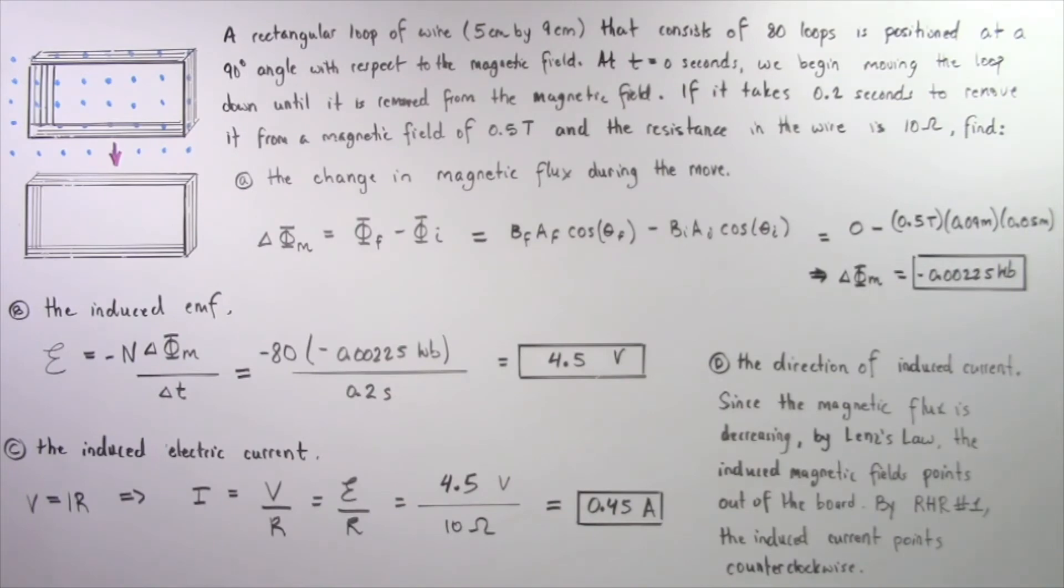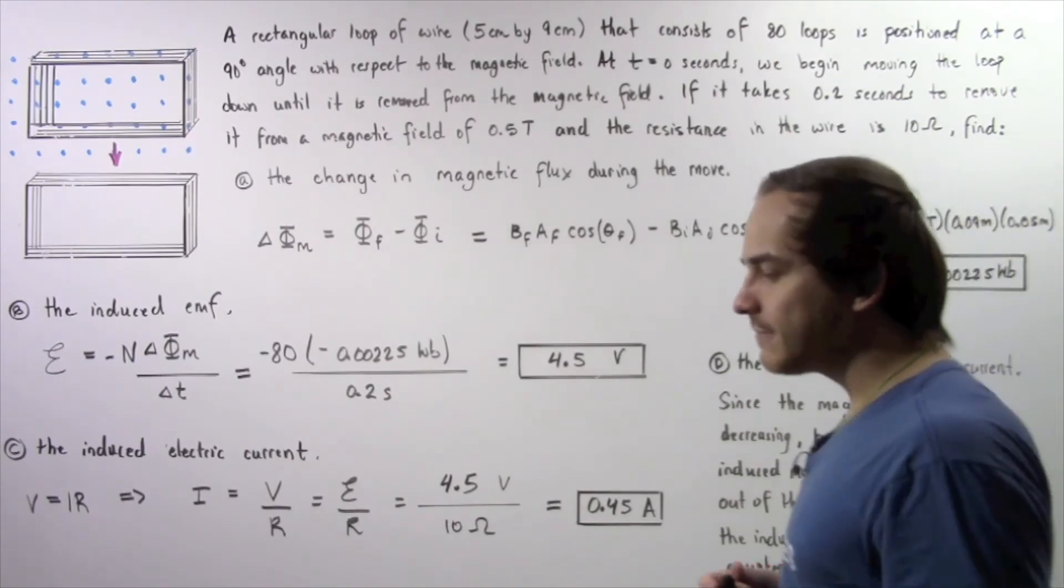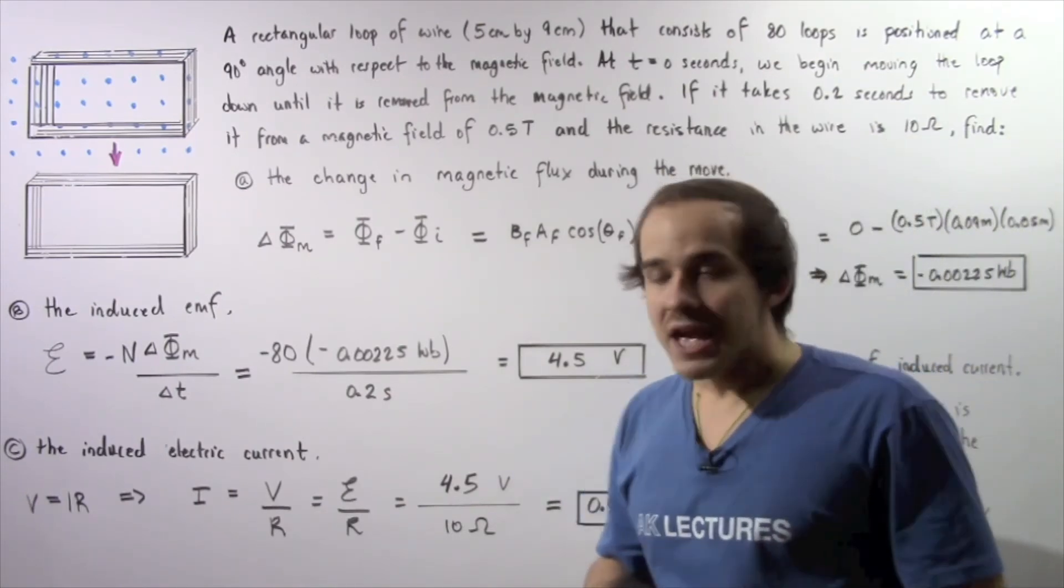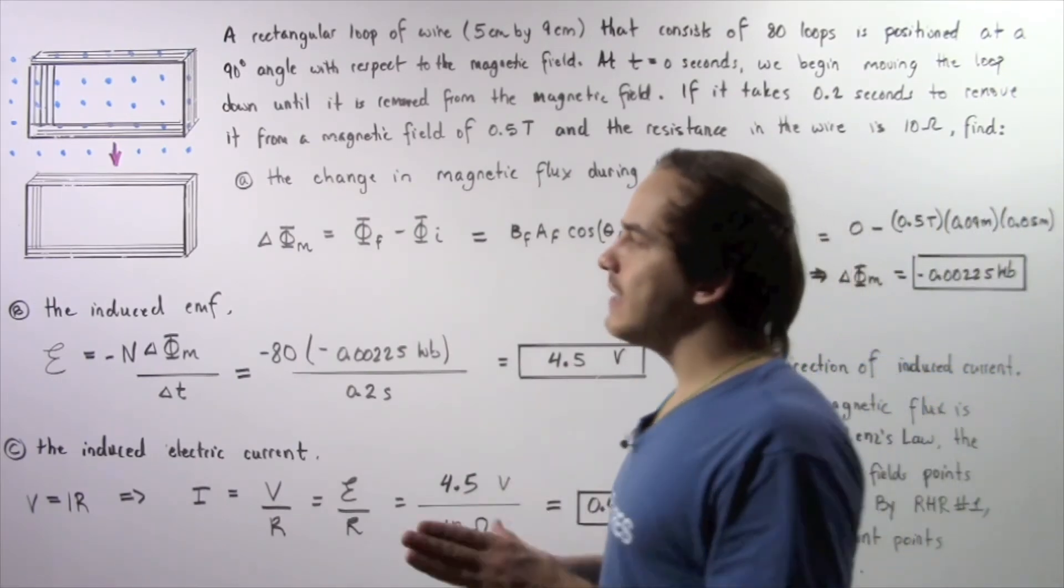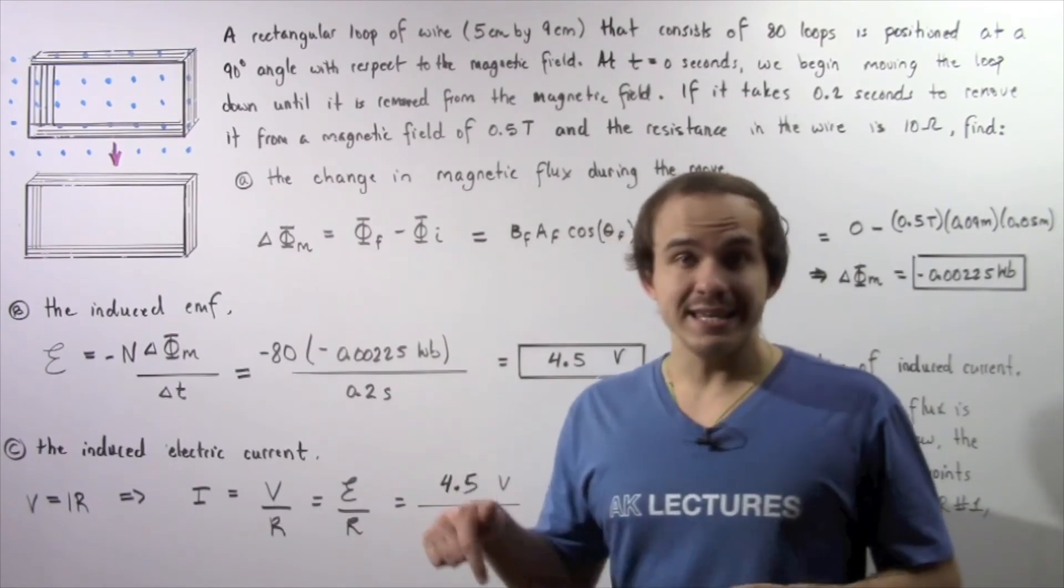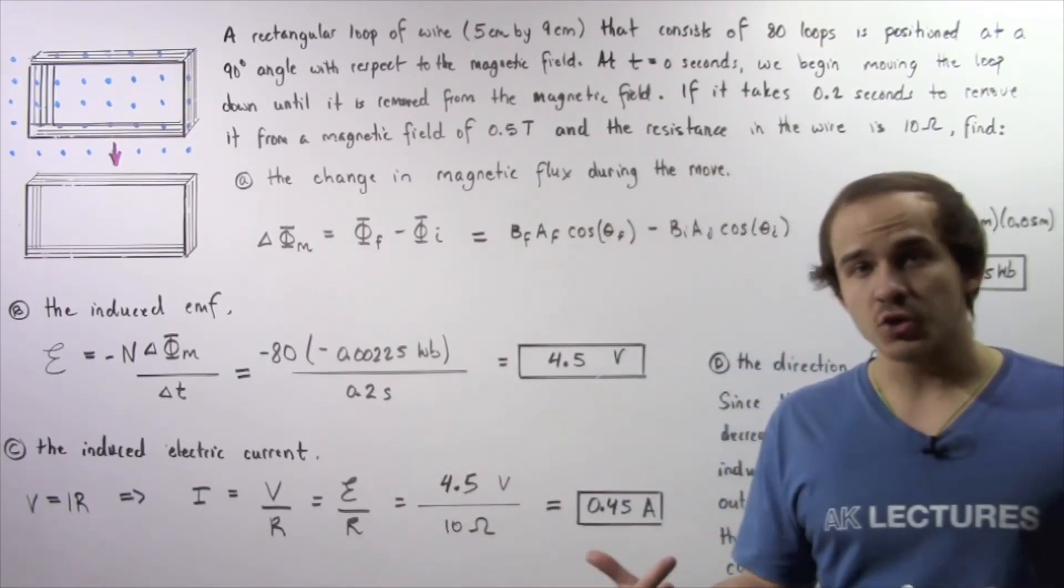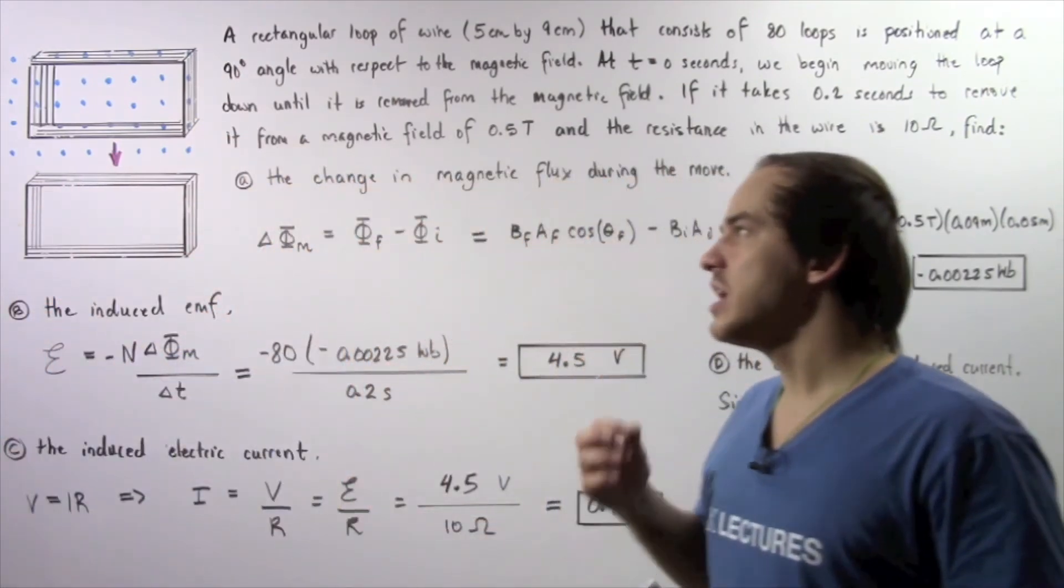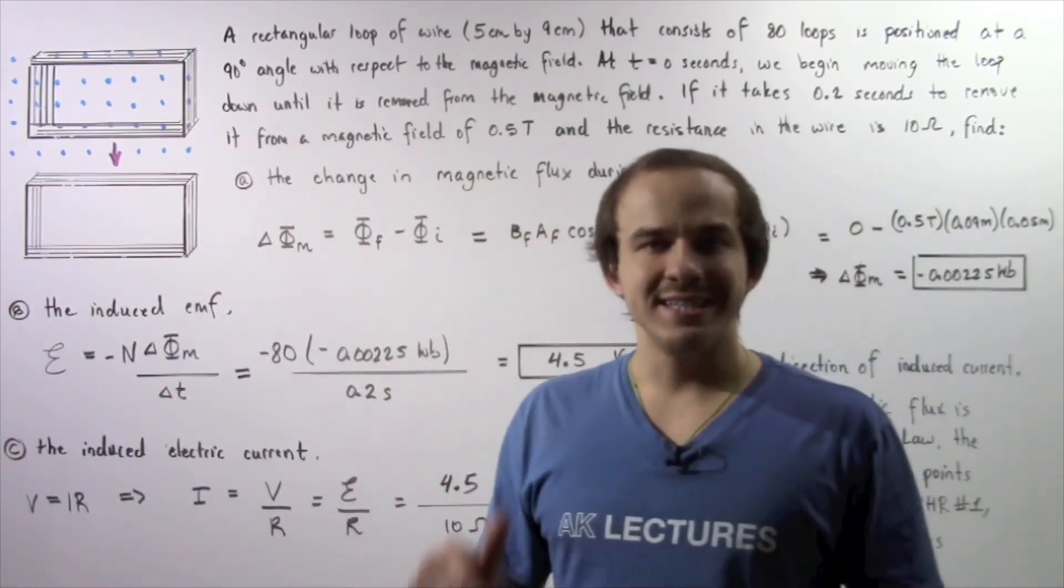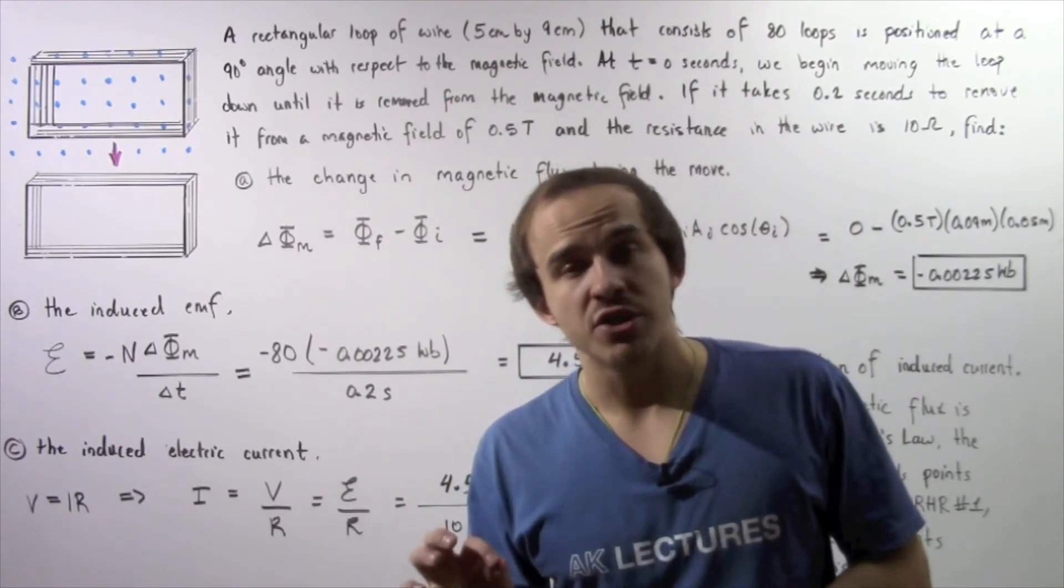Find the direction. So to find the direction we have to apply Lenz's law. So in the first step, we essentially have to figure out if our change in flux is decreasing or increasing. In other words, because we're moving our loops down, that implies that our magnetic flux is decreasing.